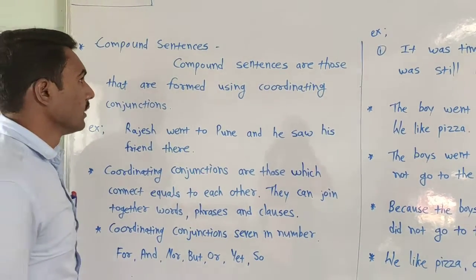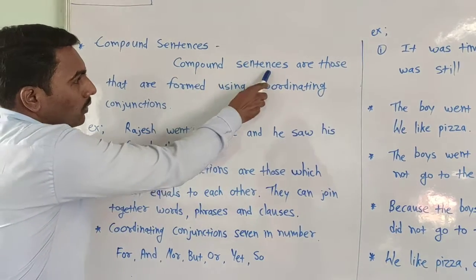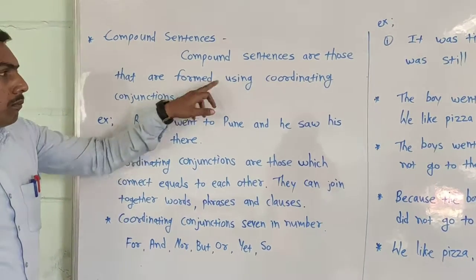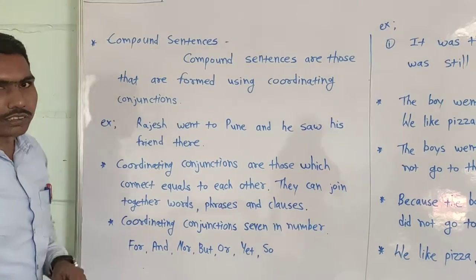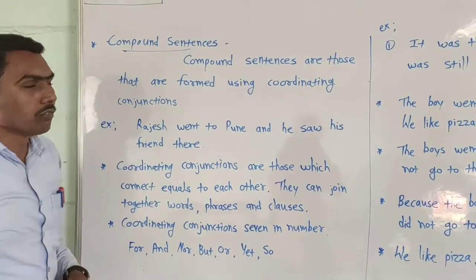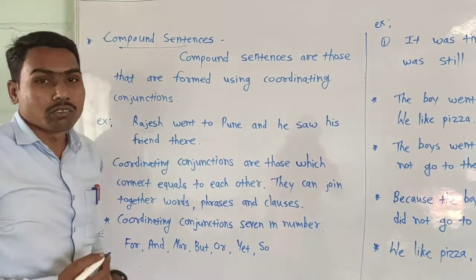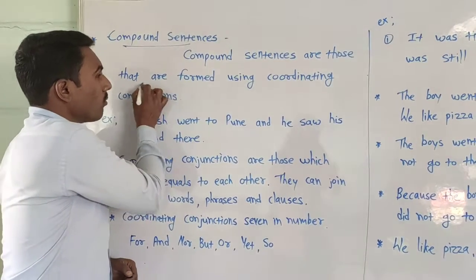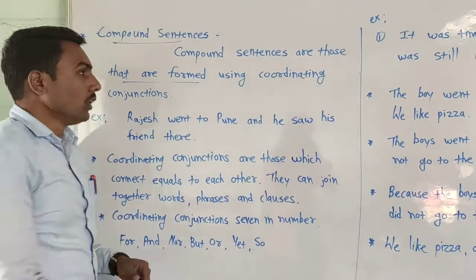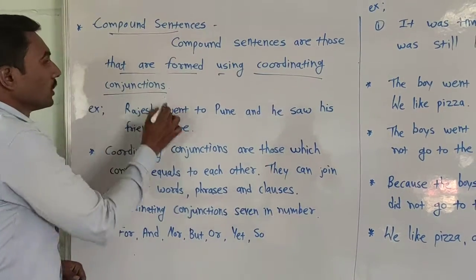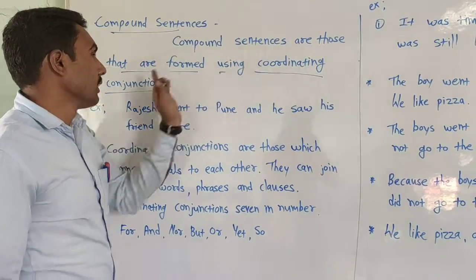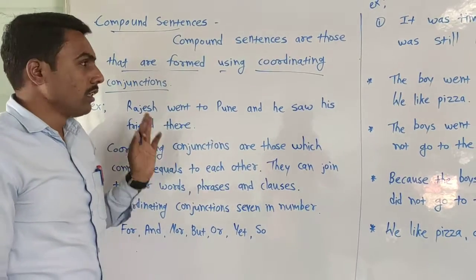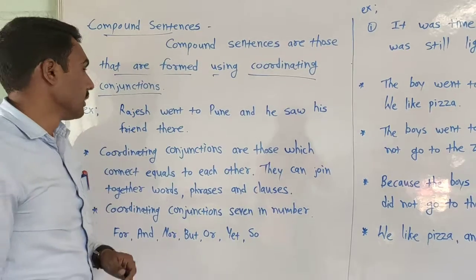The definition of compound sentence — look here. Compound sentences are those that are formed using coordinating conjunctions. Compound sentence means 'sayyut vakya'. Compound sentences are those that are formed using coordinating conjunctions — that is called compound sentence.